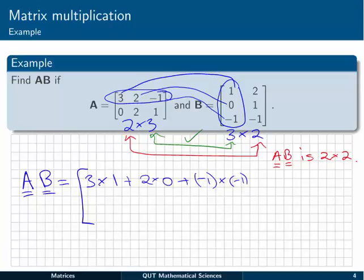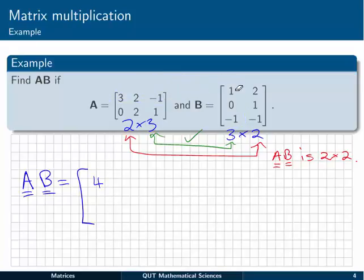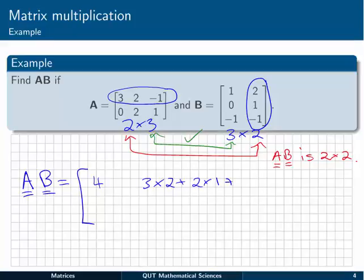Let's quickly do that. That's 3 plus nothing plus 1, which is 4. So I can replace all of that with 4. Next one along, first row, second column. I'm still in the first row of A but now the second column of B. I go across: 3 times 2, plus 2 times 1, plus -1 times -1. That's 6 plus 2 is 8, plus 1 more is 9. So I can slot that in there now.